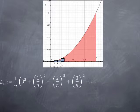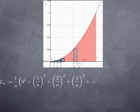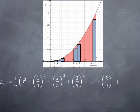All rectangles have one side of length 1 over n on the x-axis. The height of the first non-flat rectangle is 1 over n squared, the second is 2 over n squared, and so on. On the interval from k over n to (k+1) over n, we have an inscribed rectangle whose height is k over n squared. We keep going until the last rectangle, which has height (n−1) over n squared.